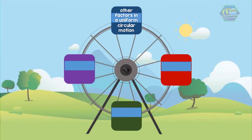Going back again to the topic, let's talk about the other factors in a uniform circular motion. These other factors are what we call period, frequency, and angular frequency.